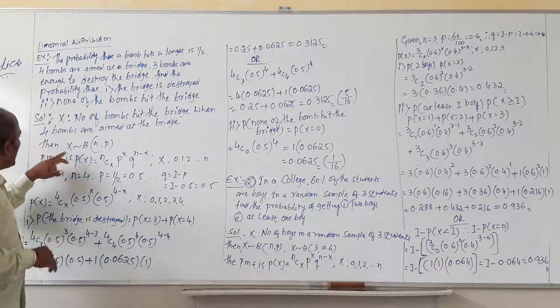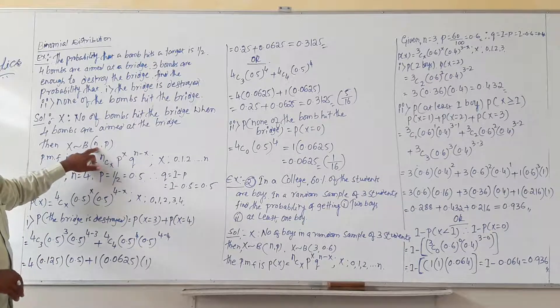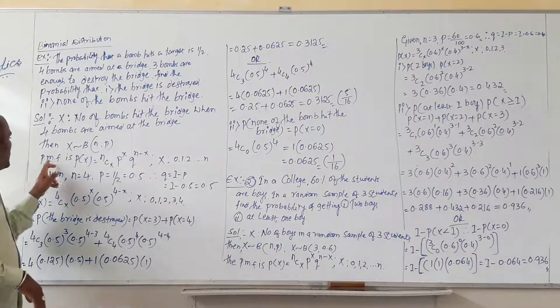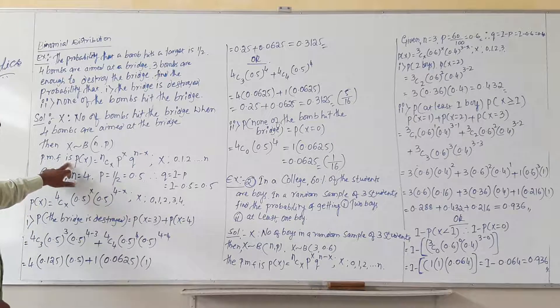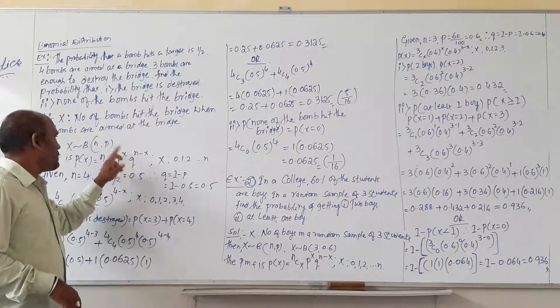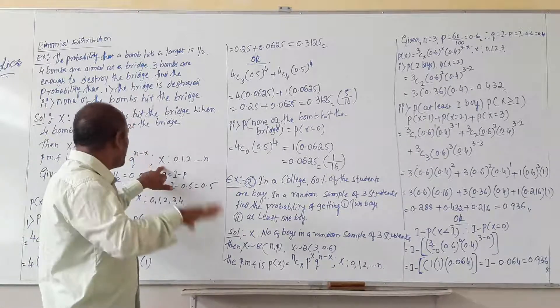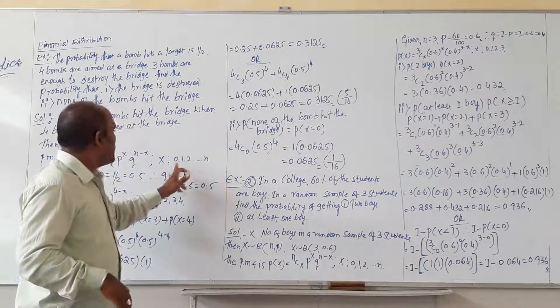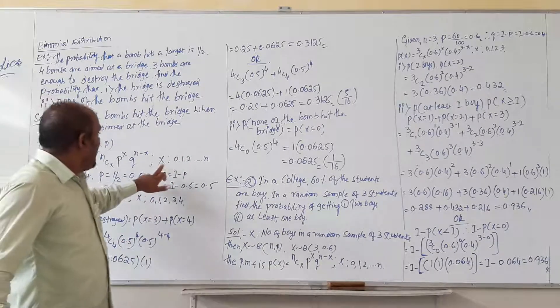So then x is a binomial variable with a parameter n comma p. You know very well the parameter of a binomial distribution. So then the pmf, it means the probability mass function, is p of x equals to nCx, p raise to x, q raise to n minus x. The range of x is determined or defined only by the maximum value of small n. So 0, 1, 2 up to n, which again is x value.